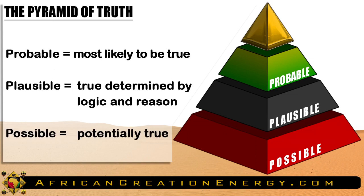In summary: possible is information that can be true or has the potential of being true; plausible is information that is true determined by valid logic and reason; and probable is information that is most likely to be true. These are the three steps on the road to the truth which separate truth from falsehood.